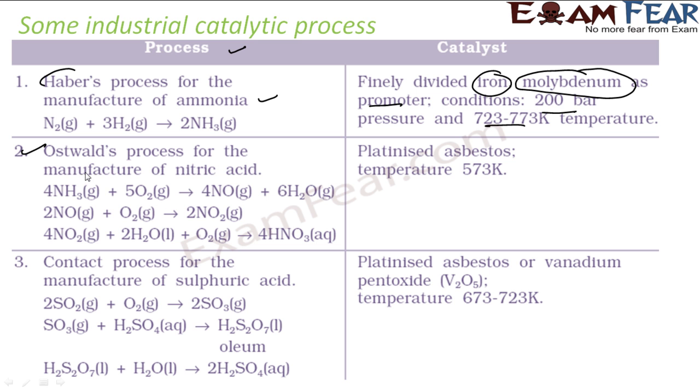In Ostwald's process for the manufacture of nitric acid, platinized asbestos is used as catalyst at 573K temperature. For the contact process to manufacture sulfuric acid, platinized asbestos or vanadium pentoxide (V2O5) is used.